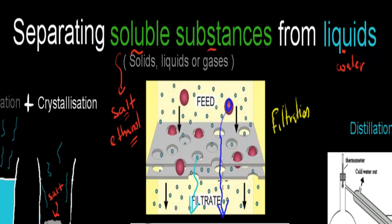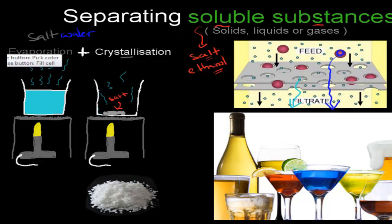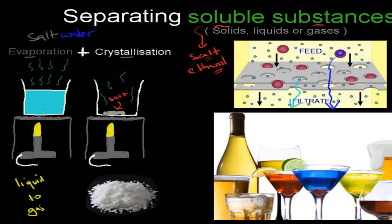So if we want to separate salt from water, what we could do is use a technique called evaporation and crystallization. What we do here is first evaporation, which just refers to something going from a liquid state into a gas. For example, if we go from water in a liquid form to a gas, the way we usually do that is by using a Bunsen burner. We're going to heat the water, and by doing so, we're going to make the water evaporate. This water is not just pure water — it's salt water.